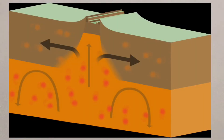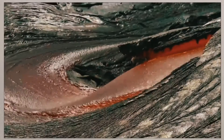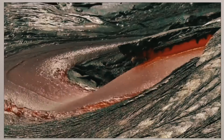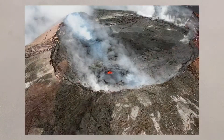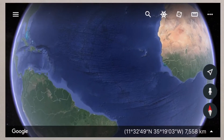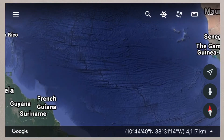At a constructive plate margin, the plates move away from each other. Magma from the mantle rises and is forced to the surface. This can cause both earthquakes and volcanoes. The lava is very fluid and it will run for a fair distance, creating more flat, shield volcanoes. The mid-Atlantic Ridge is an excellent example of a constructive margin.